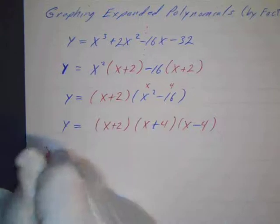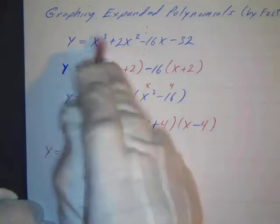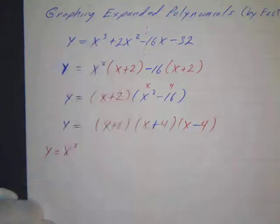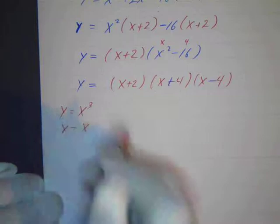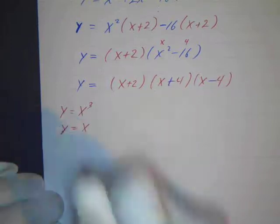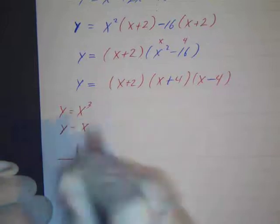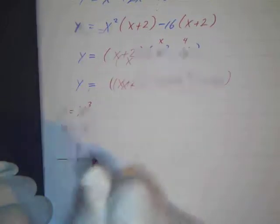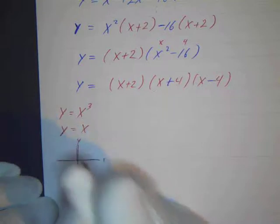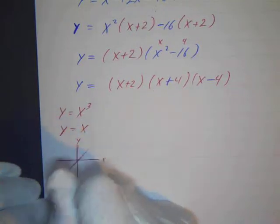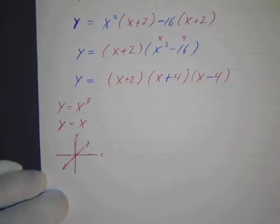So y equals x to the third, or you can just look at your largest degree term. That's going to determine your end behavior. Now this is positive odd, it's the same thing as y equals x to the first power. And that's our model function for that, just our diagonal line. So our model function for any odd function is y equals x, and that's a diagonal line with a slope of one that goes through the origin, and that gives you your end behavior.